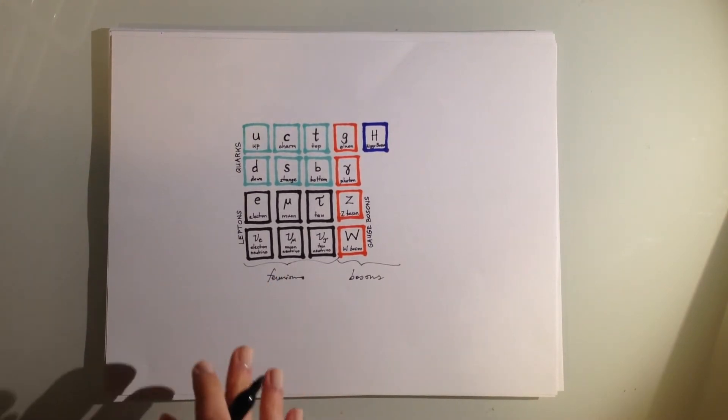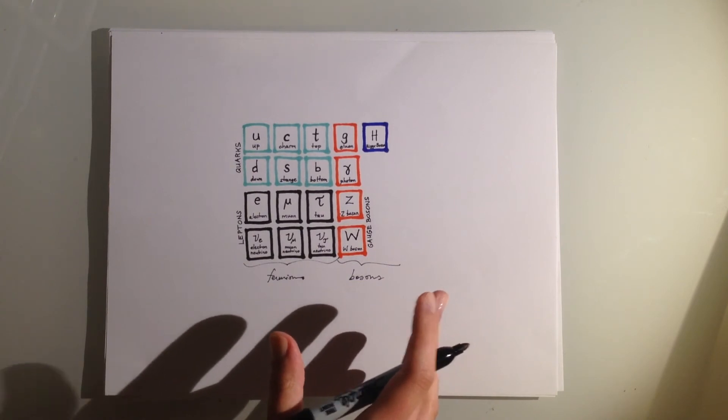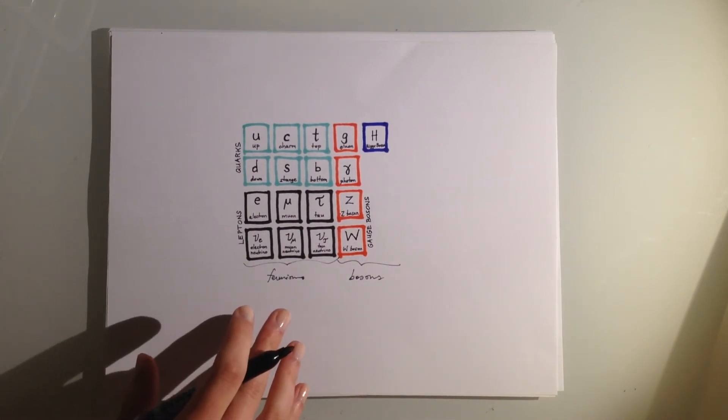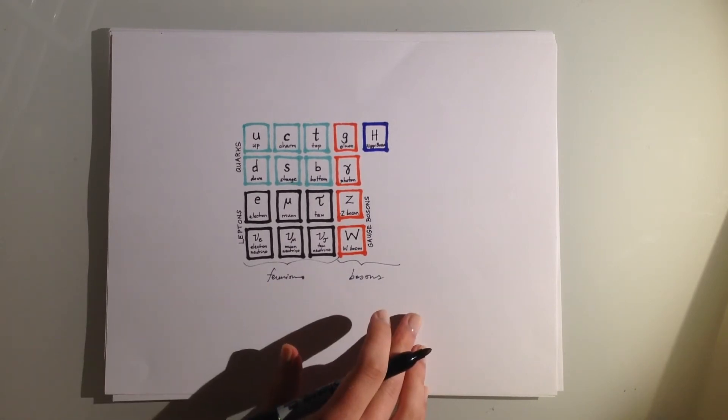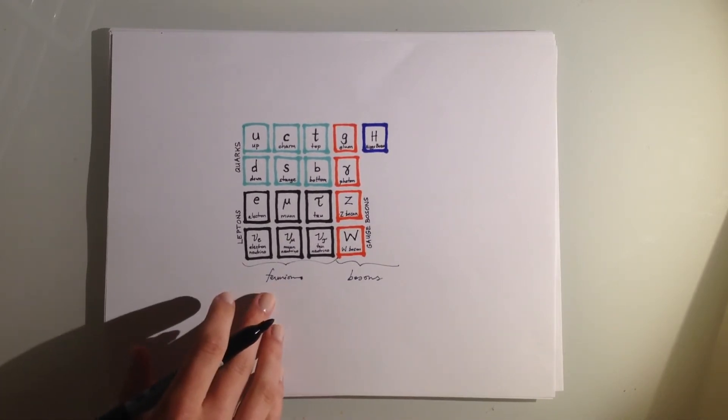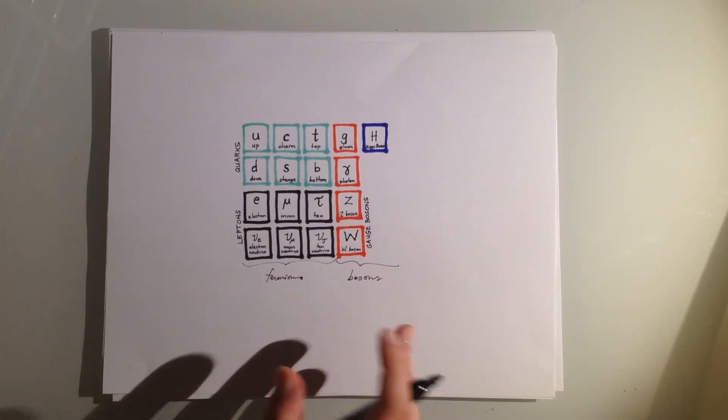Each one of these boxes represents a different elementary particle that is flitting around the universe. There are a lot of different particles here, but the important thing that I want you to notice is that it can be broken down into two main groups. On the left, you have the fermions, which make up matter. And on the right, you have the bosons, which carry forces.